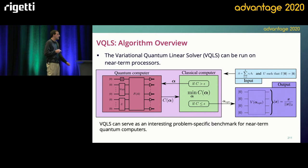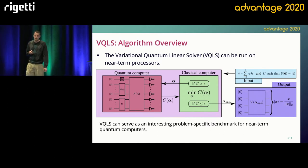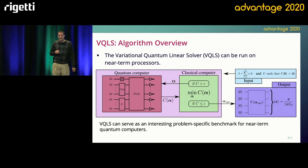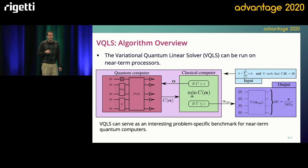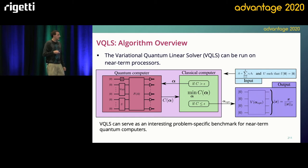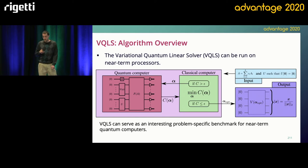The way VQLS works is that we assume you give as inputs the matrix as a linear combination of unitaries, and also a unitary U which prepares the B vector from the ground state. Once you have this, you proceed in the standard way for variational algorithms, in that you have a quantum computer which evaluates some cost function, and then you have a classical optimization routine which adjusts the parameters and attempts to minimize the cost. The output of this is an optimal set of parameters that allows you to prepare a quantum state proportional to the solution of the linear system.